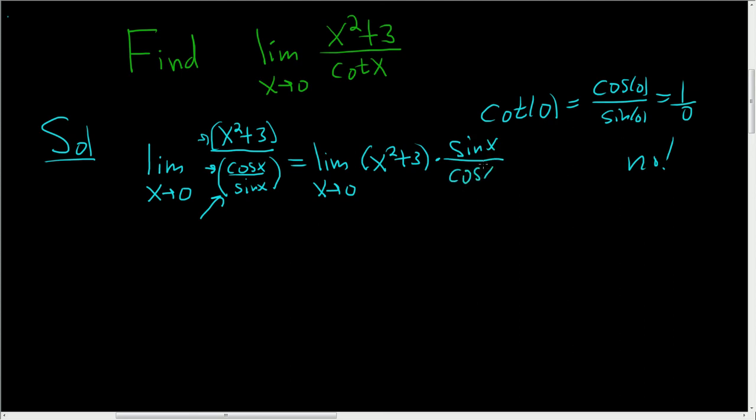At this point, you can just evaluate this function at 0. So you get 0 squared plus 3 times the sine of 0 over the cosine of 0.